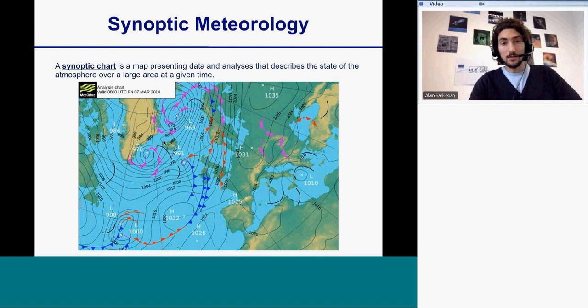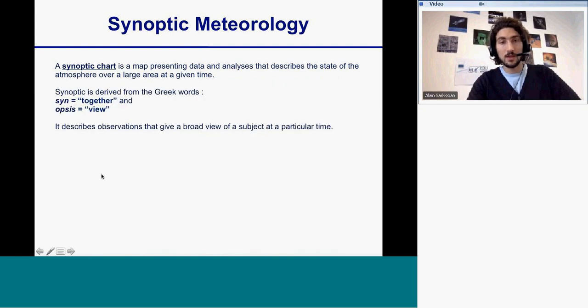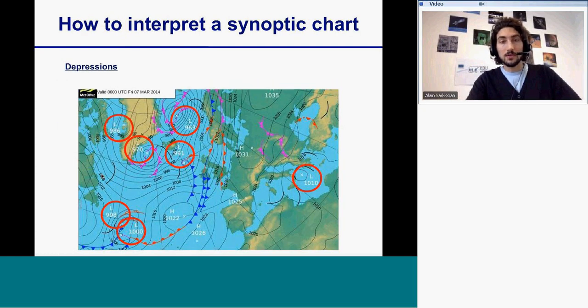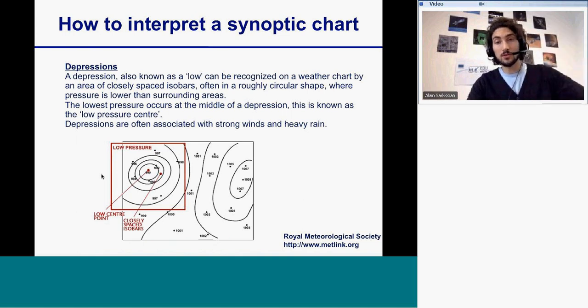And mainly I will go in details about the lows, the depression. I will give the definition of a depression. I will explain that it's what we call a low. On the weather chart it's represented by closed spaced isobars. It's where we find a pressure lower than the surrounding areas.